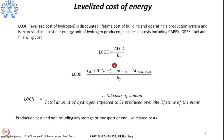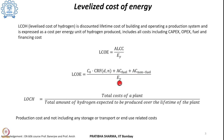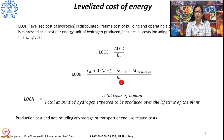We can also find the levelized cost of energy by dividing the annual life cycle cost by the amount of energy that plant produces over its lifetime. The life cycle levelized cost of energy is the initial investment times the capital recovery factor plus fuel-related and non-fuel-related operation and maintenance expenses, divided by the total energy produced during the life cycle of the plant.